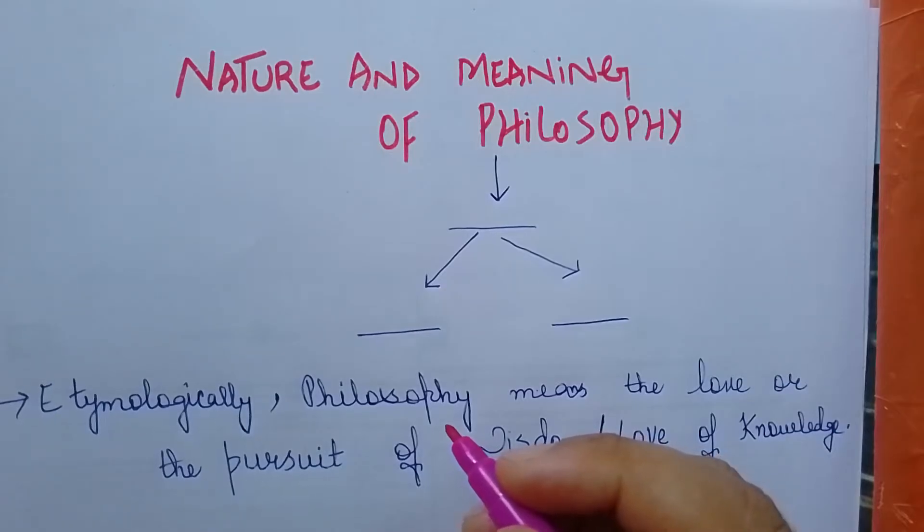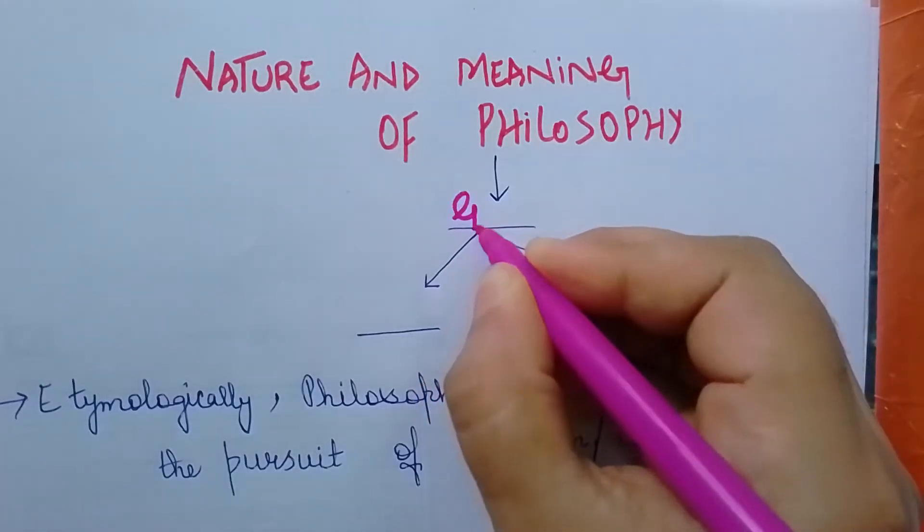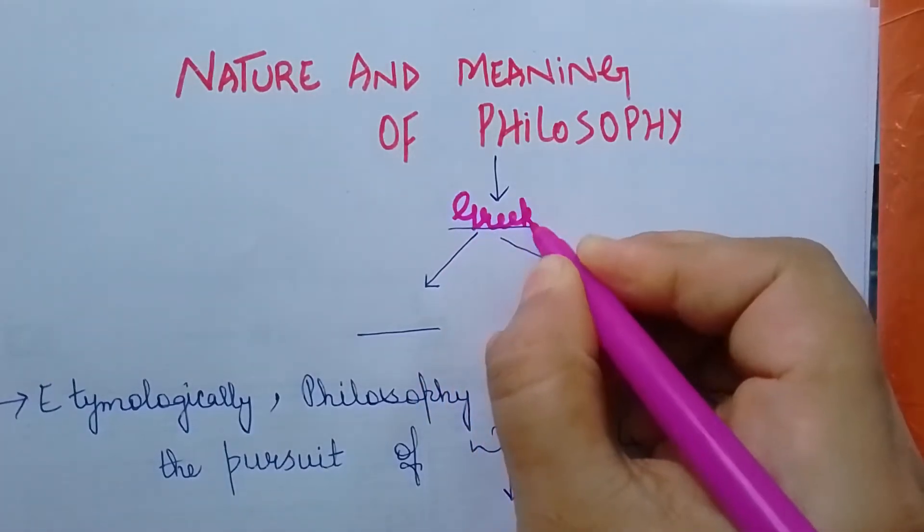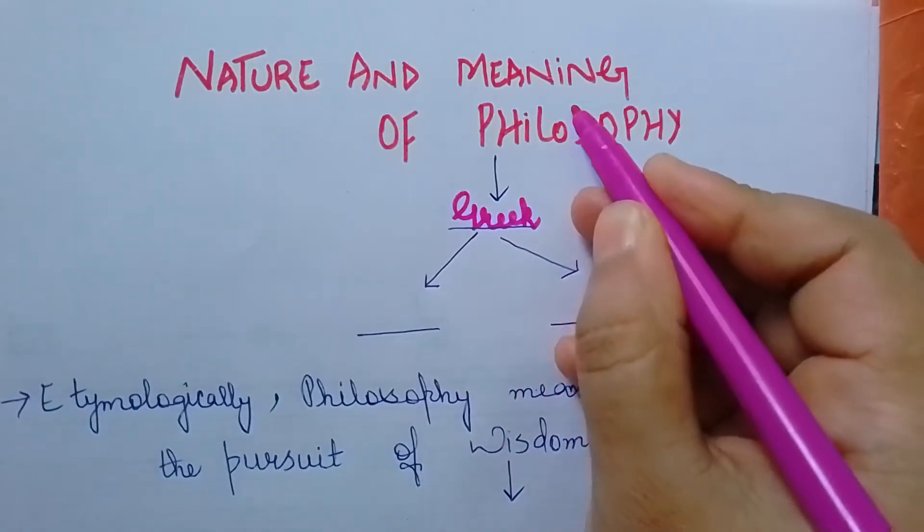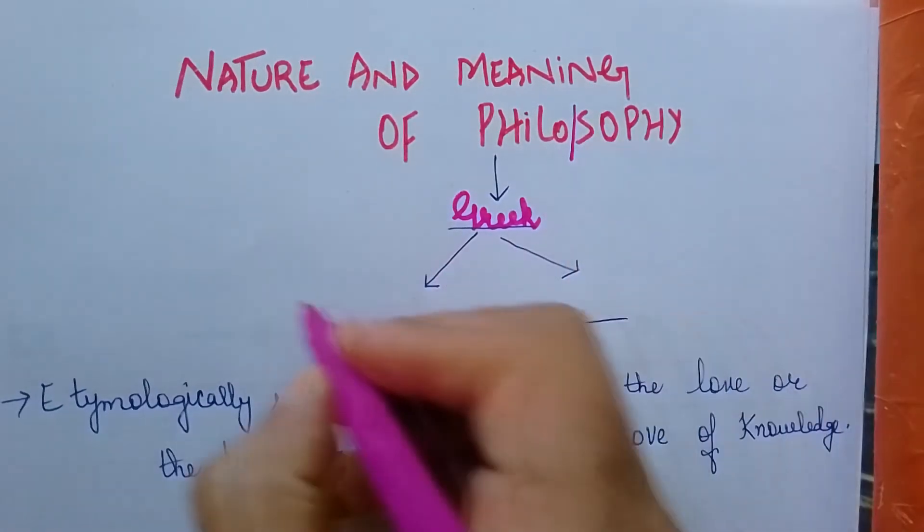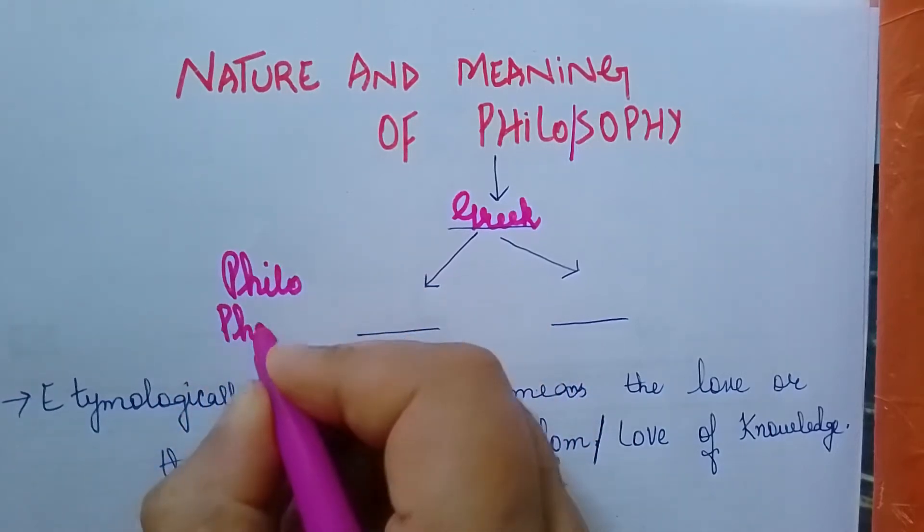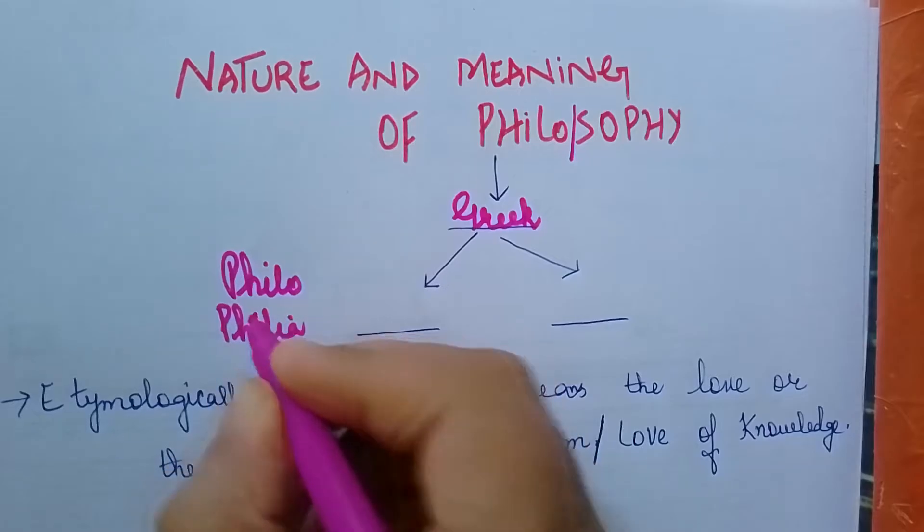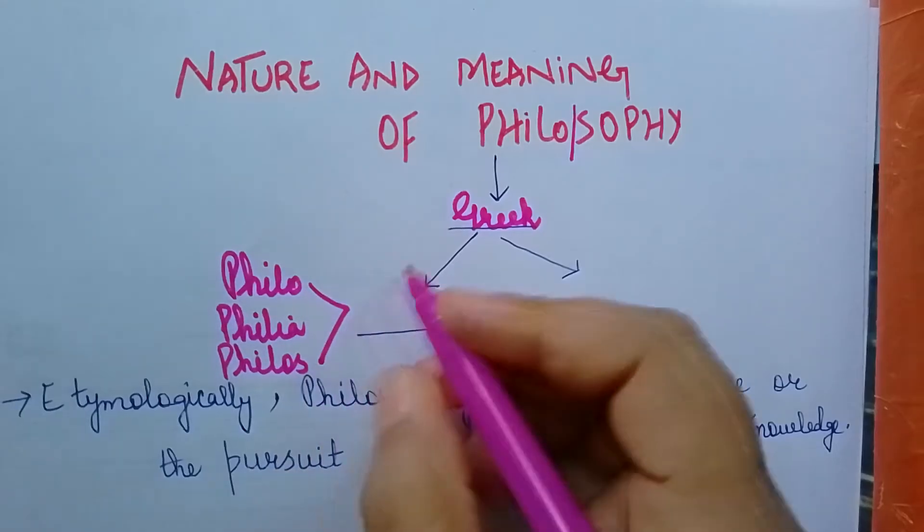Which is the nature and meaning of philosophy. Philosophy is derived from a Greek word divided into two parts: philo, philia, or philos, which means love.